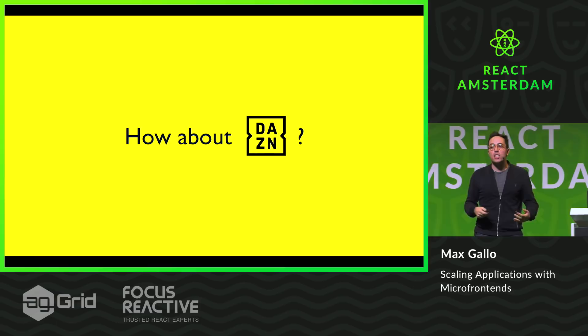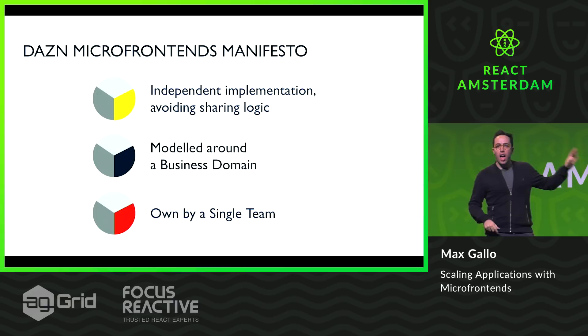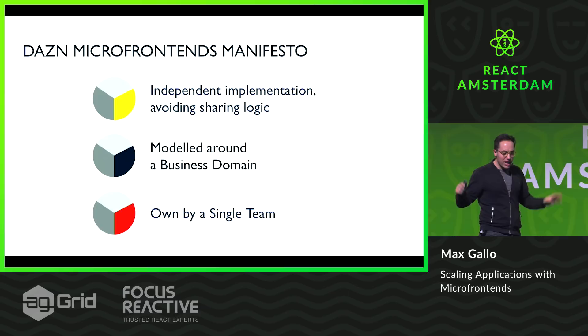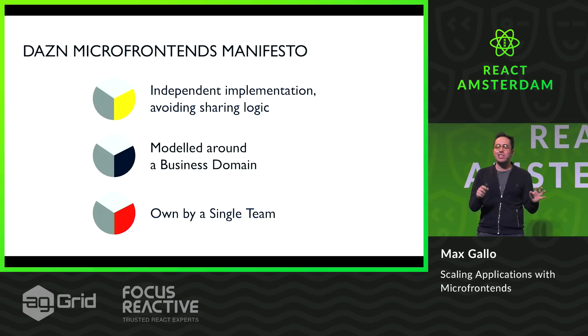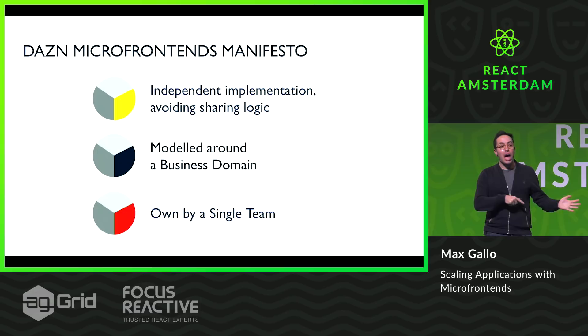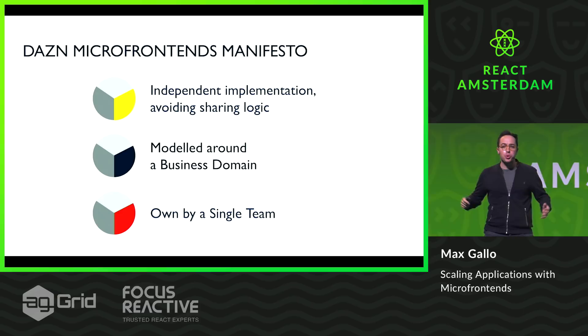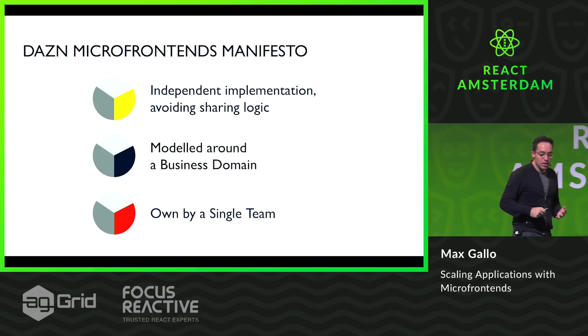How about DAZN? This is our manifesto. First: independent implementation, avoiding sharing logic — the key is enabling teams to work independently. Then it's modeled around the business domain. And it's owned by a single team. One team works on one micro frontend modeled around a business domain.